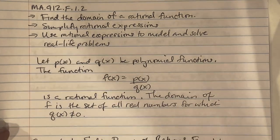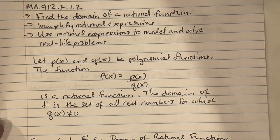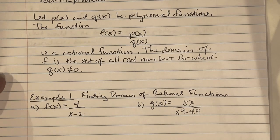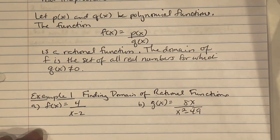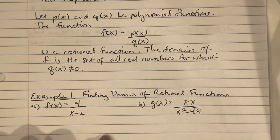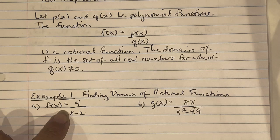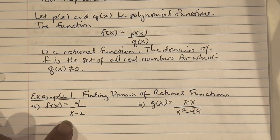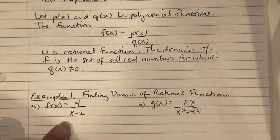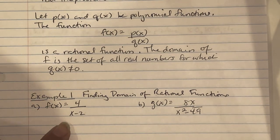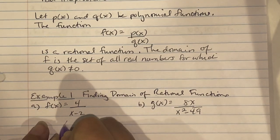In Example 1, we want to find the domain of rational functions. On part A, f of x equals 4 over x minus 2. To find the domain, always look to the denominator. Set the denominator equal to 0: x minus 2 equals 0, so x equals 2.